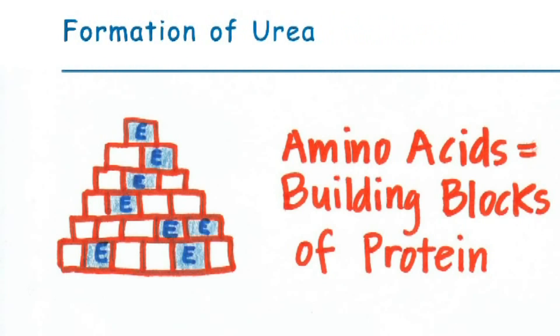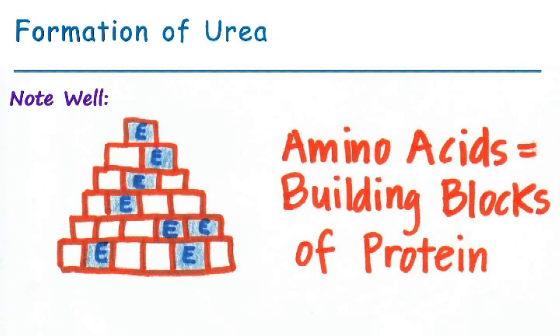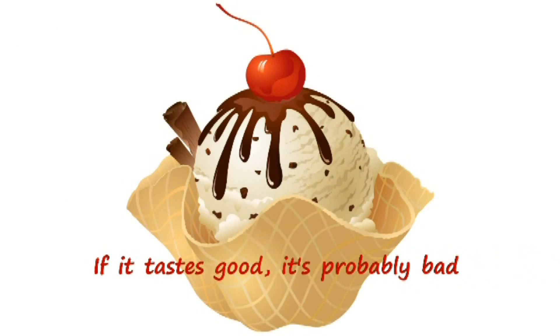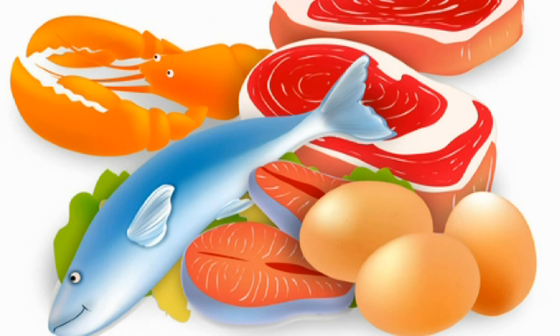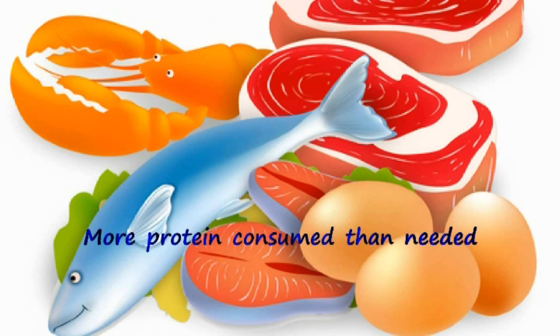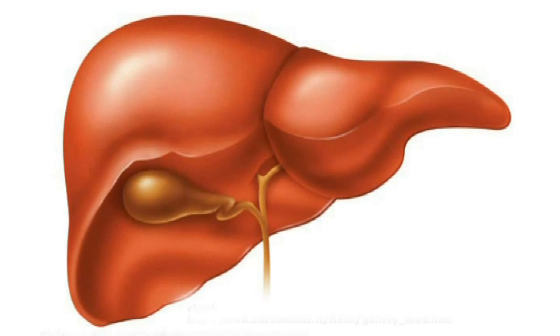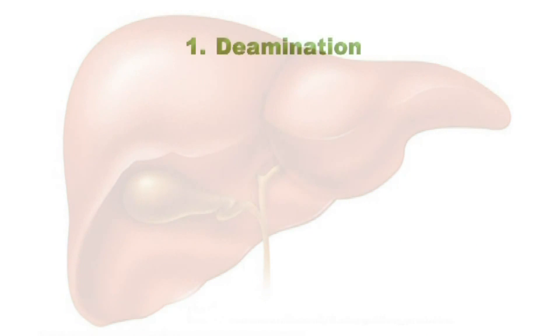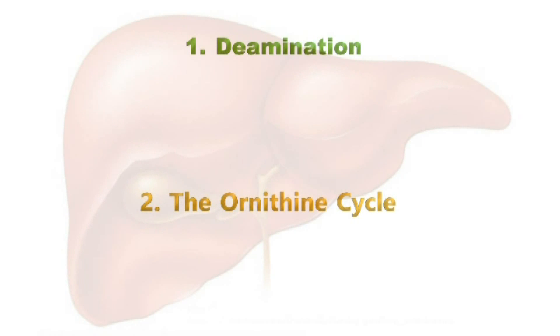Let's now talk about the formation of urea. Proteins in the diet are digested — they are broken down to produce amino acids, which are then absorbed and transported by the blood. Unlike other substances such as fat, the human body is unable to store excess protein. Since we usually eat more protein than we actually need, something needs to be done about the excess. There are two stages in the formation of urea: deamination and the ornithine cycle. Both of these stages happen inside the liver.